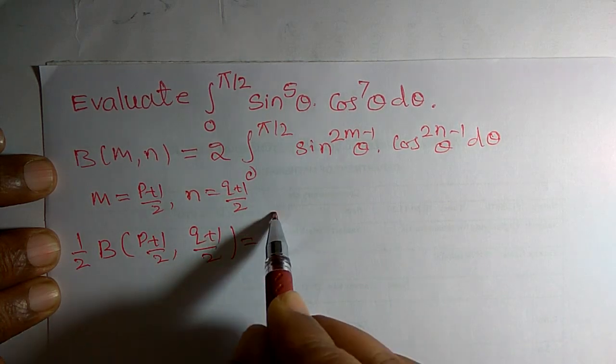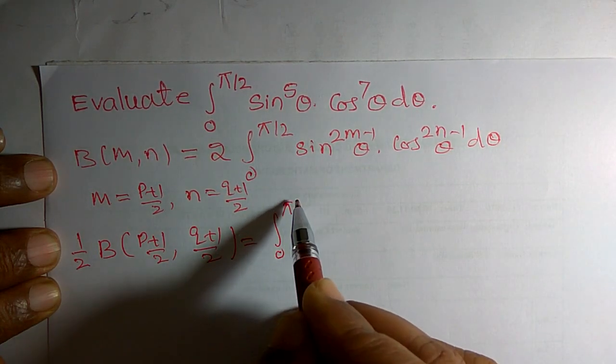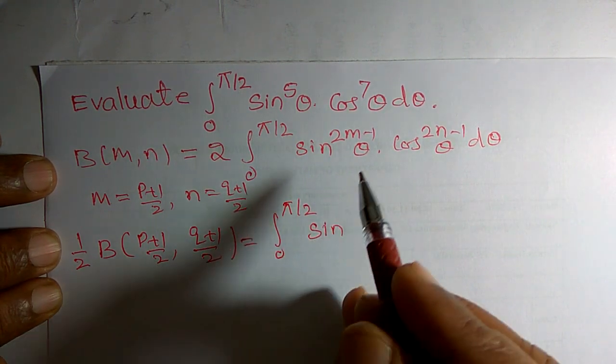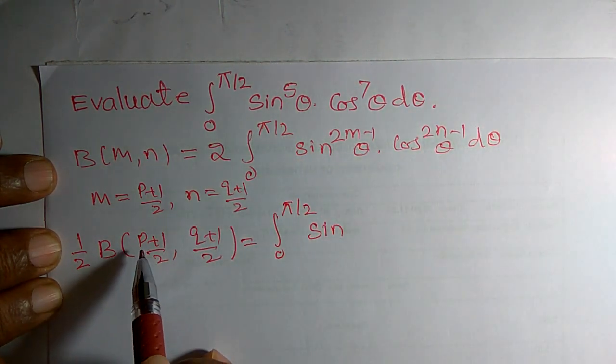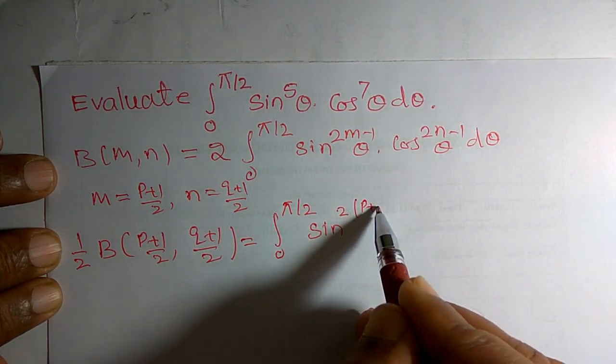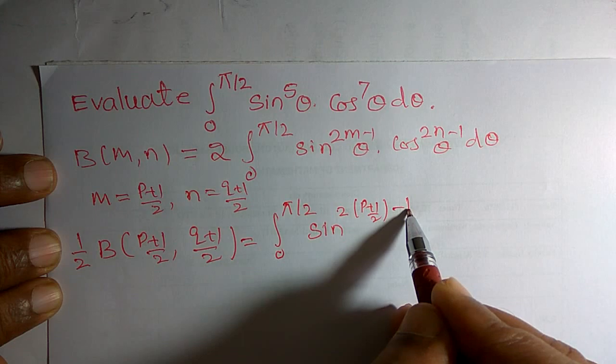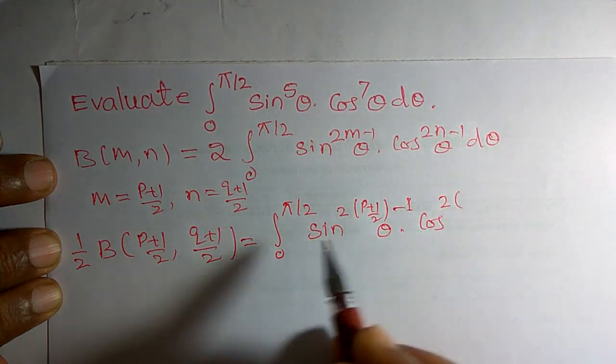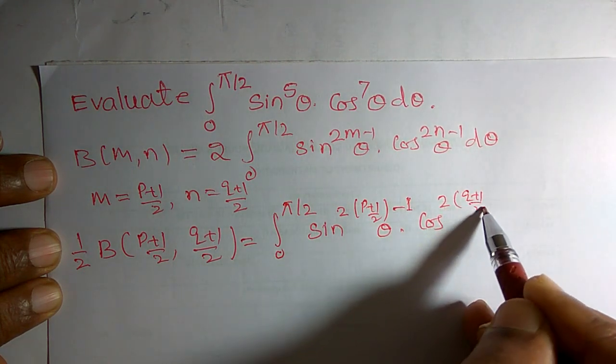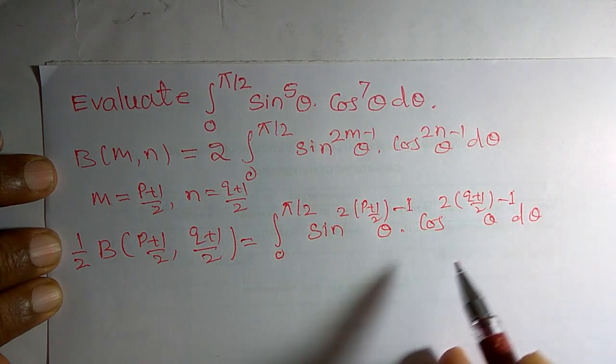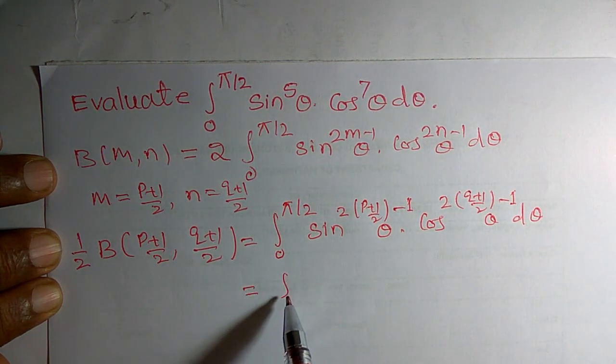This can be rewritten as 1 by 2 times beta of p plus 1 by 2, q plus 1 by 2, equals integration of 0 to π by 2 sin raised to... Now, I have to replace m by p plus 1 by 2. It means 2 times p plus 1 by 2 minus 1 theta cos raised to 2 times q plus 1 by 2 minus 1 theta d theta.